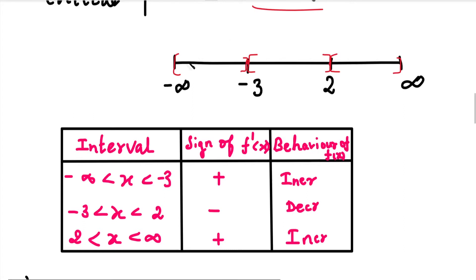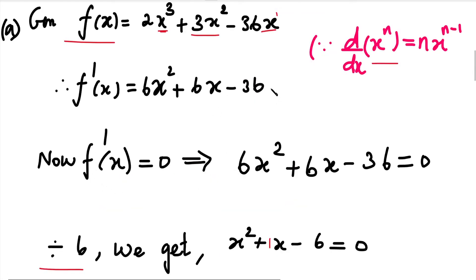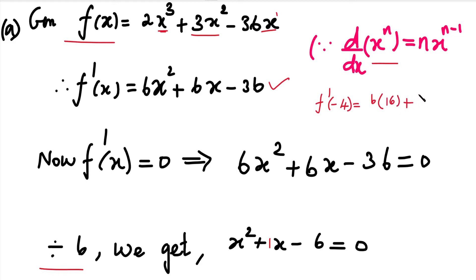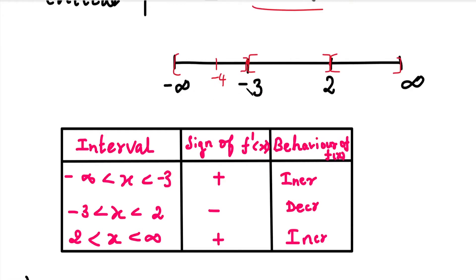In the first interval, from minus infinity to minus 3, we choose the test point x equal to minus 4. We already have f dash of x equal to 6x square plus 6x minus 36. If x is equal to minus 4, we substitute: f dash of minus 4 equals 6 into 16 plus 6 into minus 4 minus 36, which gives 96 minus 24 minus 36, giving a positive answer of plus 36. So in the first interval, f dash of x is positive.